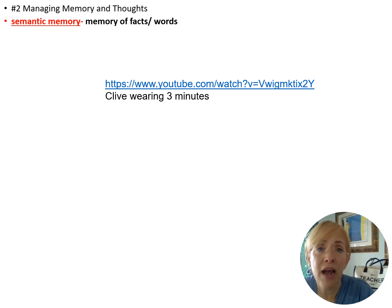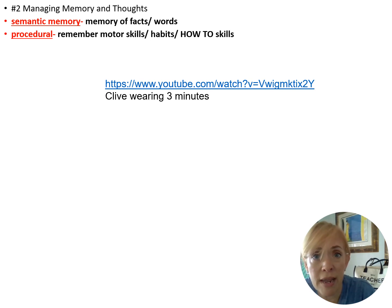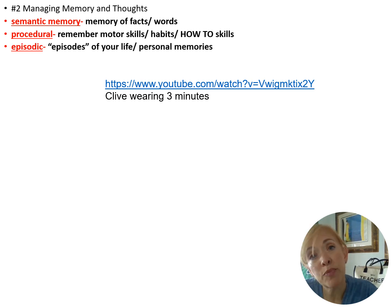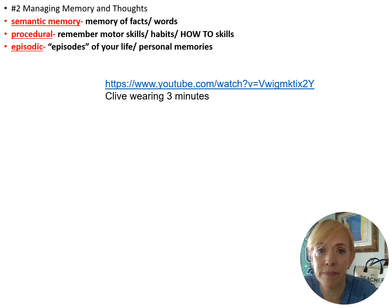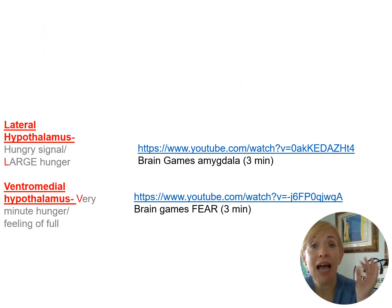Know three kinds of memory: episodic memory — the personal episodes of your life; semantic memory — memory of words and their meaning; and procedural memory — how-to skills like tying your shoe or riding a bike.